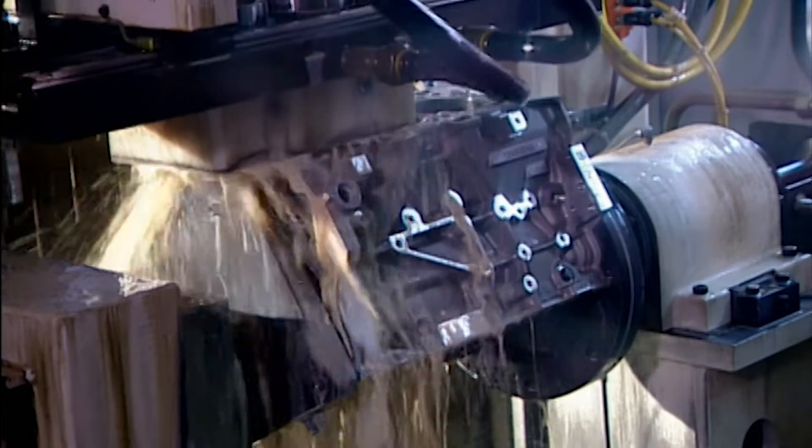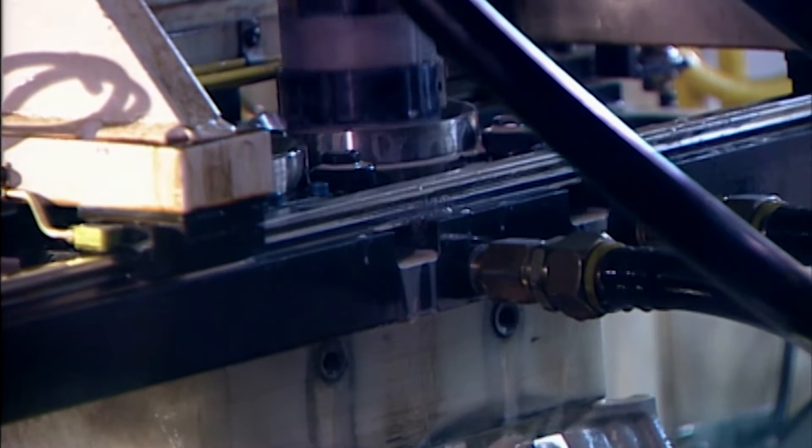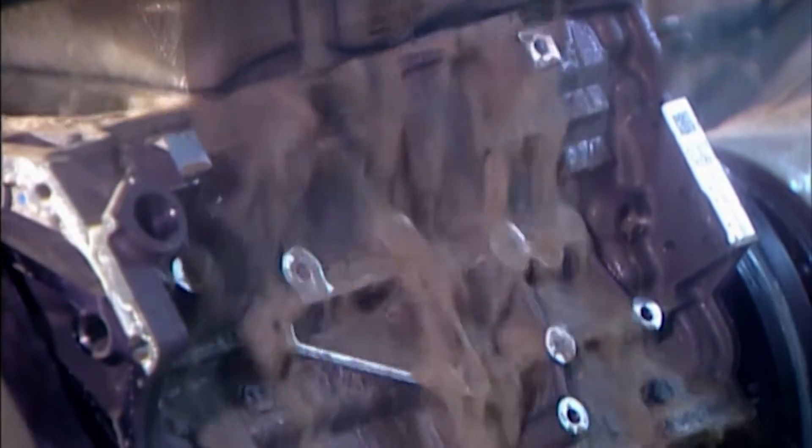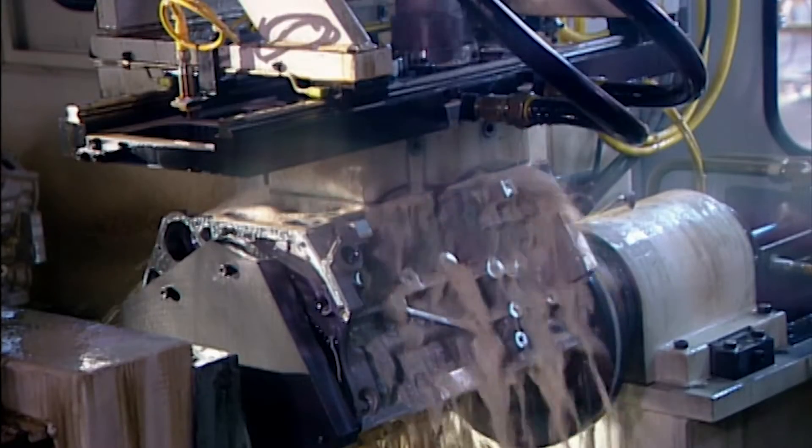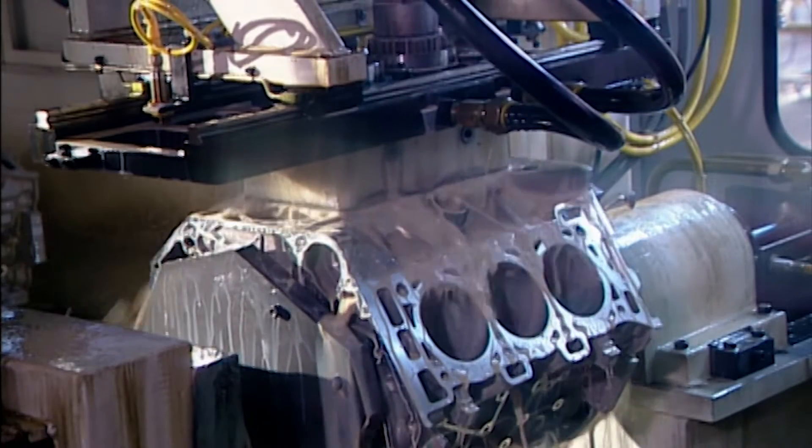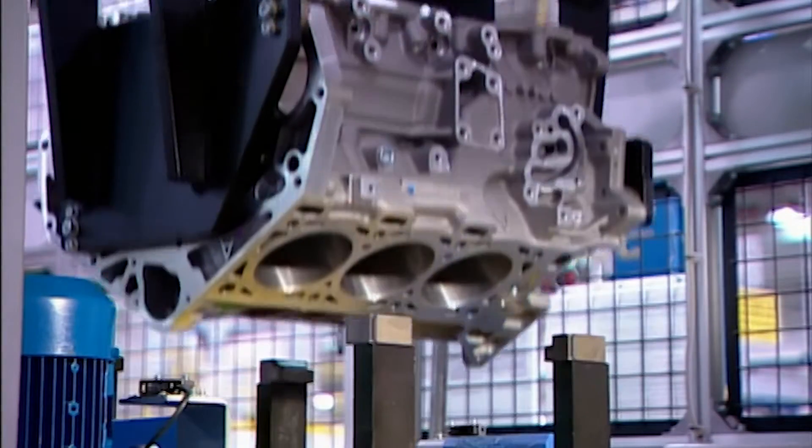Engine components are housed in what's called the engine block. It arrives at this plant partially made. Here the cylinder bores, the holes in which the pistons move up and down, are finished off by machining. The tool carves a criss-cross pattern on the cylinder bore walls. Lubricating oil will cling to the grooves in this pattern, enabling the pistons to move smoothly.